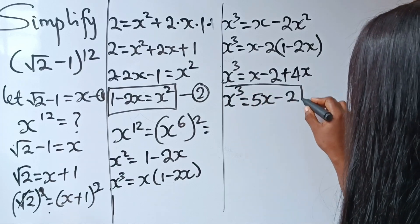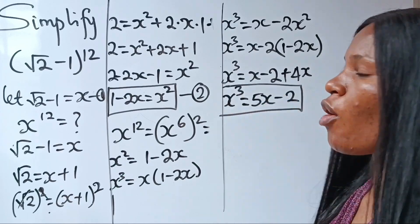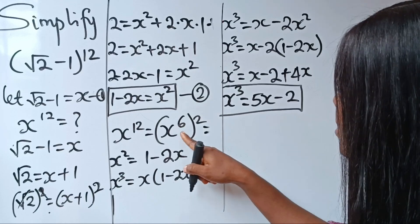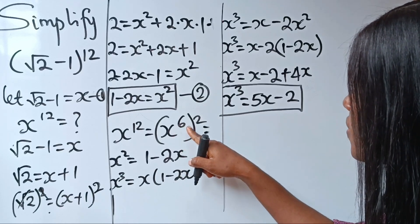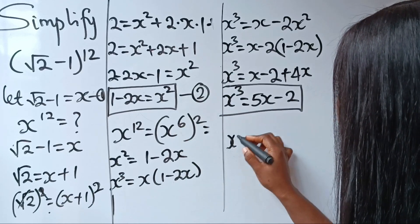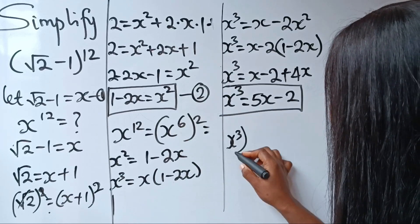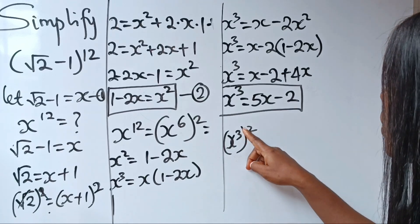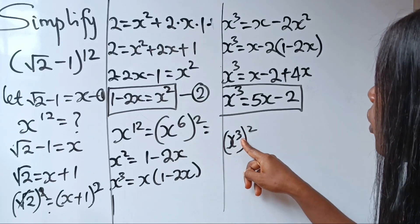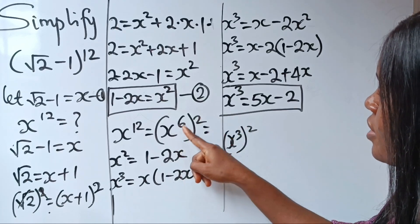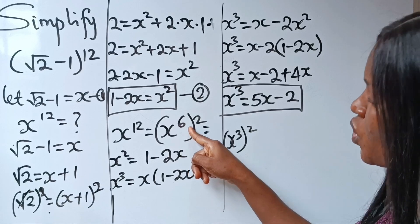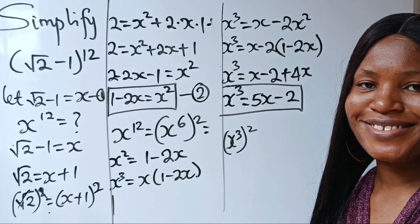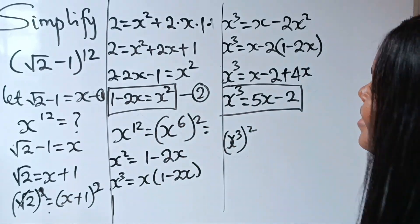We have gotten x to the power of 3. Recall that our intention is to get x to the power of 6, which we can get by squaring x to the power of 3. Then we square x to the power of 6 to get our final answer.